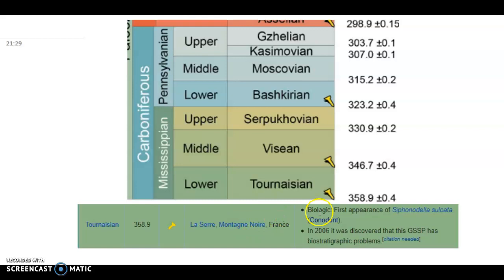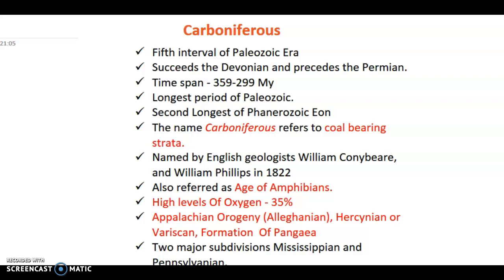Now let's talk about some basic facts of the Carboniferous period. It is the fifth interval of the Paleozoic era, coming after the Devonian and preceding the Permian. Its time span is 359 to 299 million years — it is the longest period of the Paleozoic era and the second longest of the Phanerozoic Eon. The name 'Carboniferous' refers to coal-bearing strata; it was named by English geologists William Conybeare and William Phillips in 1822.